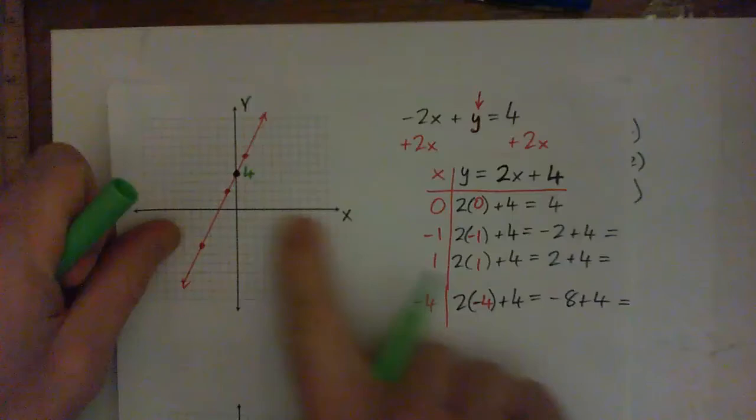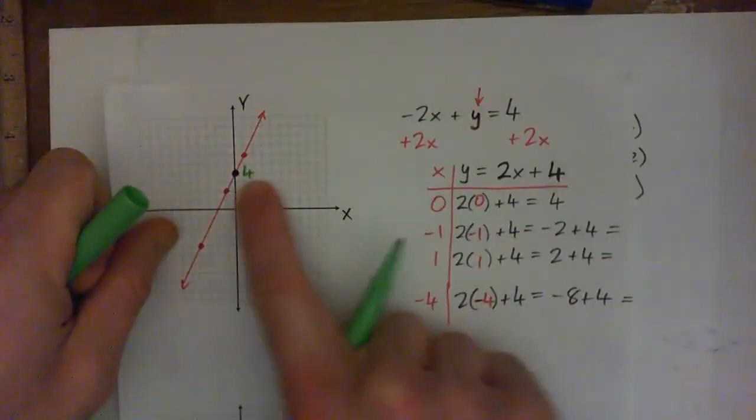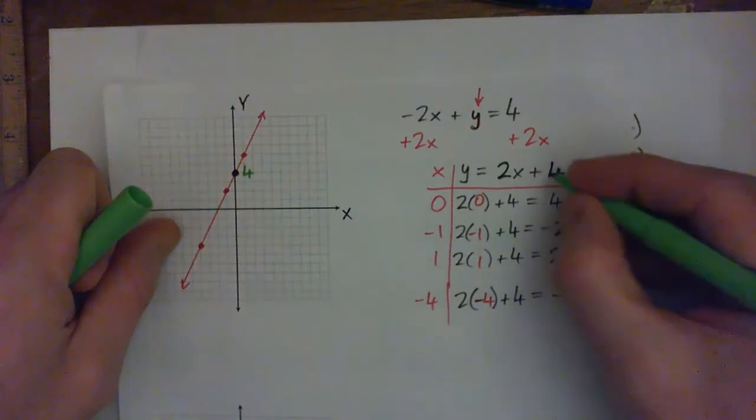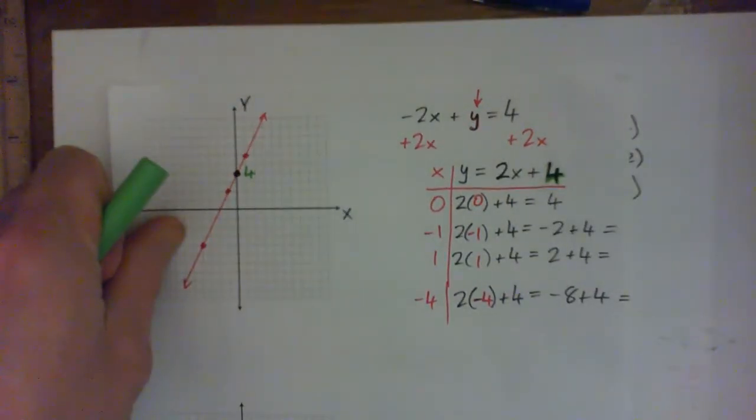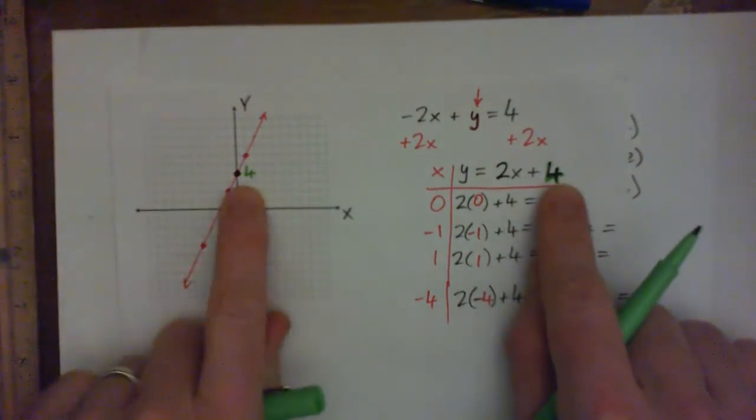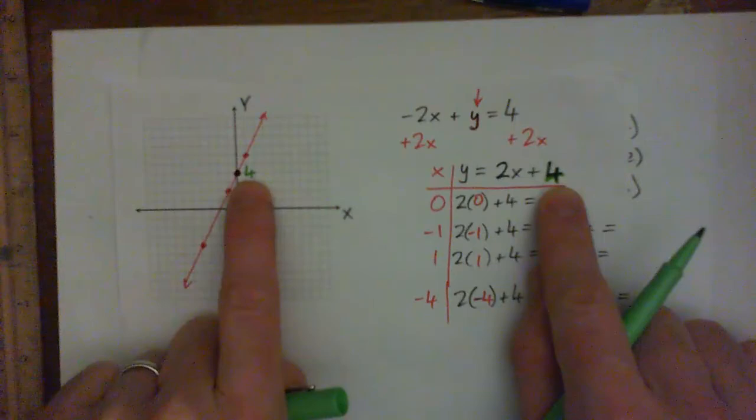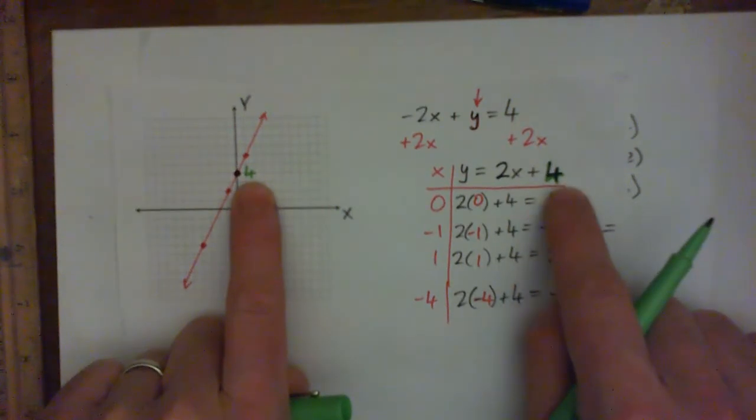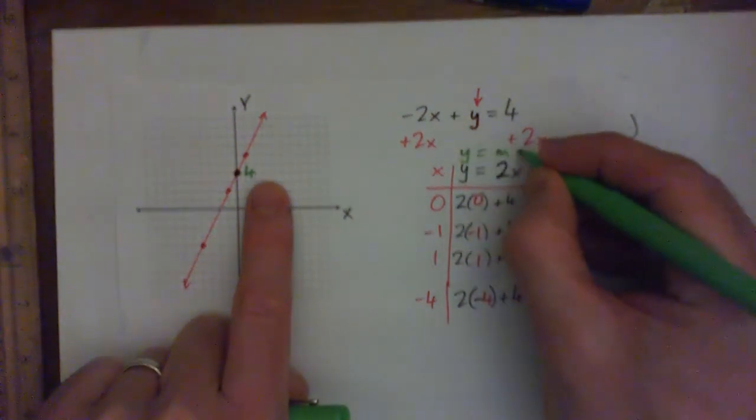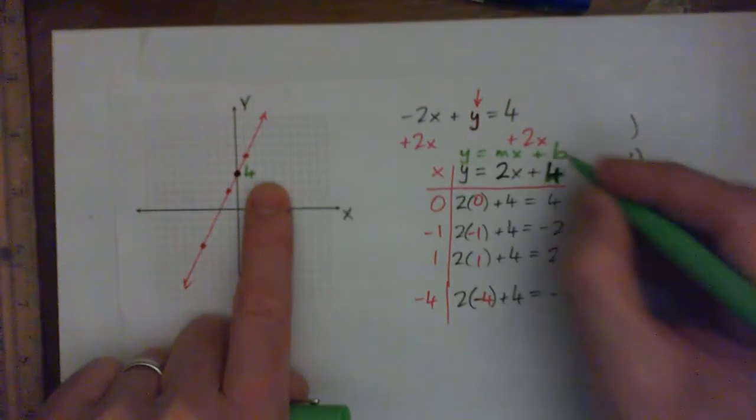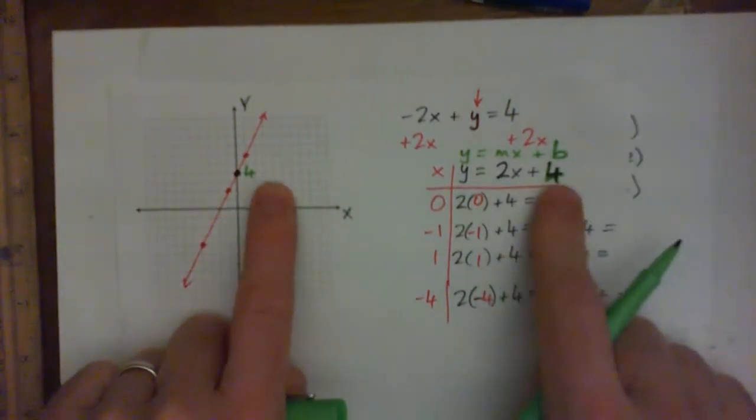And in the equation, where do we see a 4? If you look at your equation, 4 is right here, isn't it? So this is no coincidence. There's a 4 here, that's where it goes through the y-axis, and there's a 4 here. That's the y-intercept. And that's our b in y equals mx plus b. b is 4.